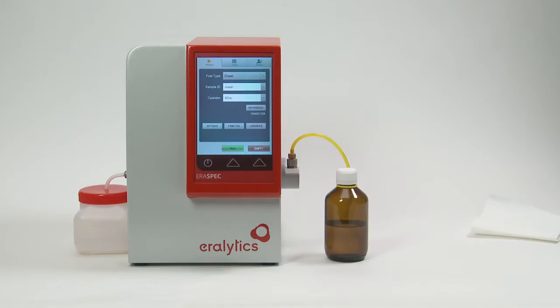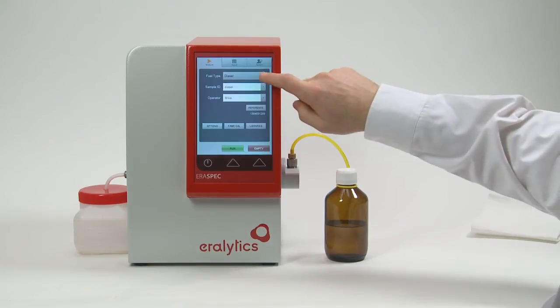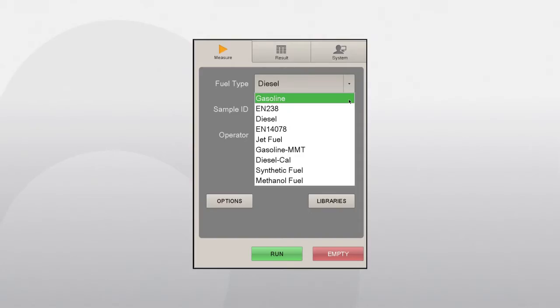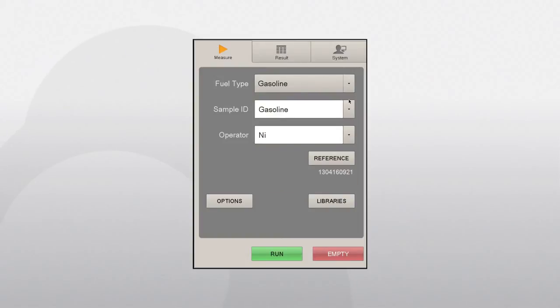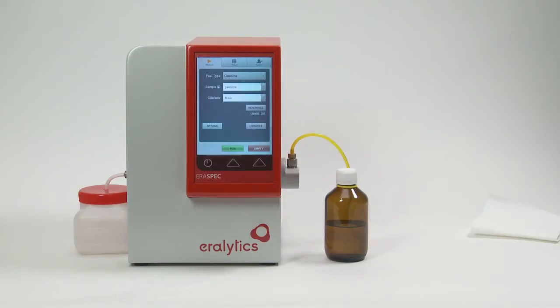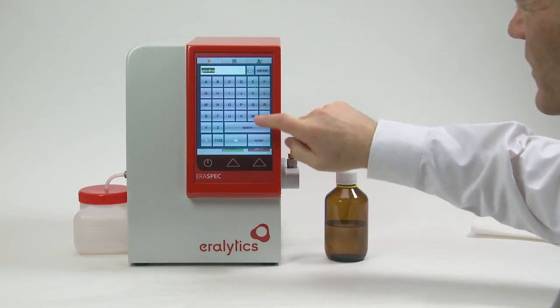The first line of the measure menu displays the type of fuel to be analyzed or the method used for the measurement. If you want to analyze a different type of fuel or use a different method, select the desired measurement method from the drop-down list. After each change of the measurement type, the AeroSpec will usually measure a new reference. Always wait until this measurement is finished.